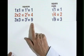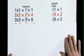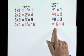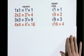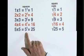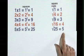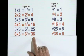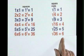3 squared is 9. Root 9 is 3. 4 squared is 16. Root 16 is 4. 5 squared is 25. Root 25 is 5. 6 squared is 36. Root 36 is 6.